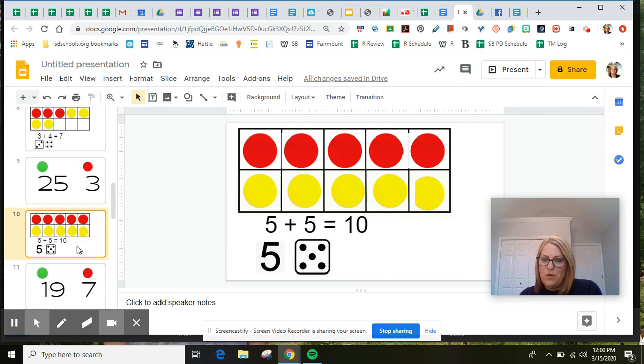Now, do you notice that your 10 frame is full? So how many dots do you see all together? You're right. Five and five is the same as 10. Now, we've been practicing counting all of the dots on our number cubes. But do you notice today I have the number five and then a number cube with five dots?